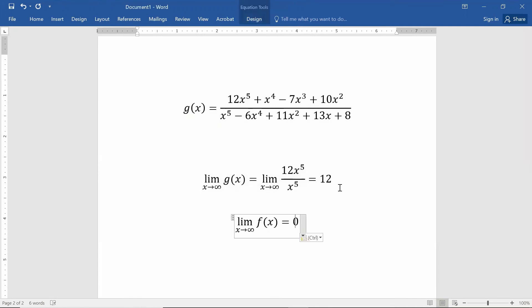As far as negative infinity goes, well, it's the exact same argument. They are the same degree. So we're going to get 12 over 1 or 12 for the limit as x approaches negative infinity.